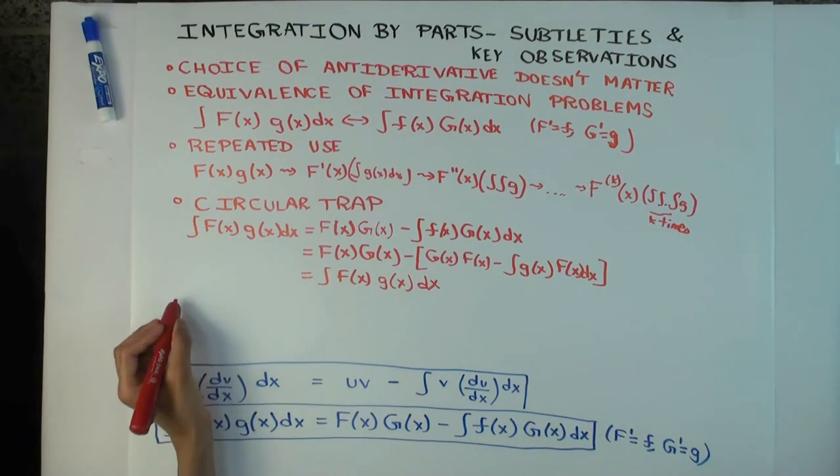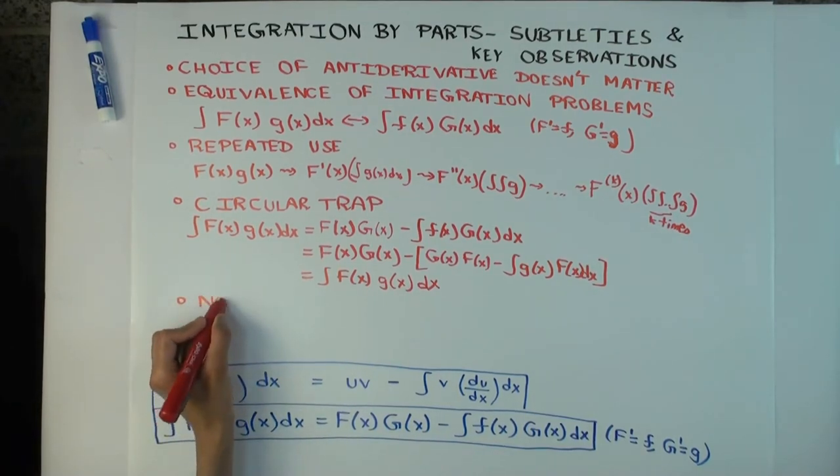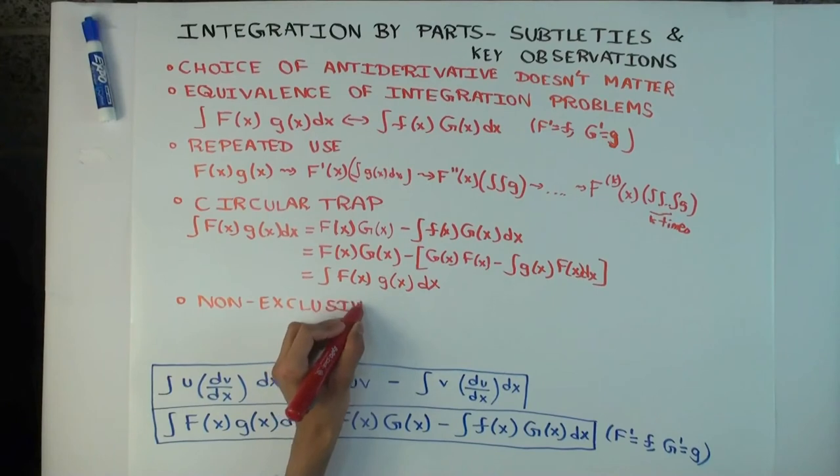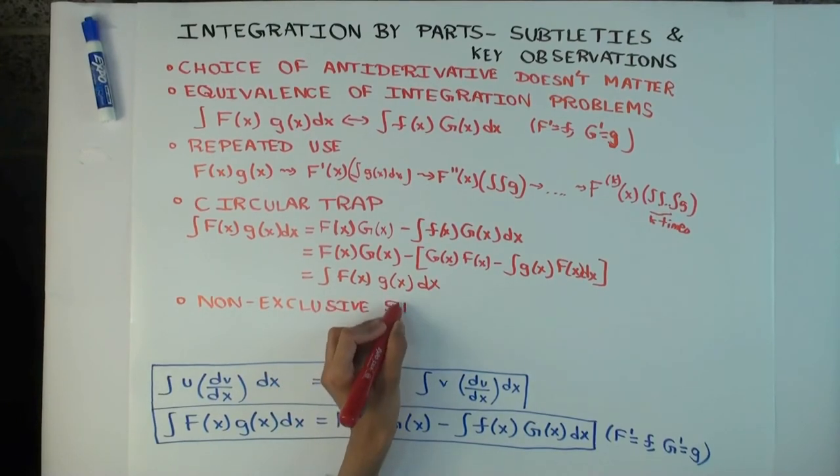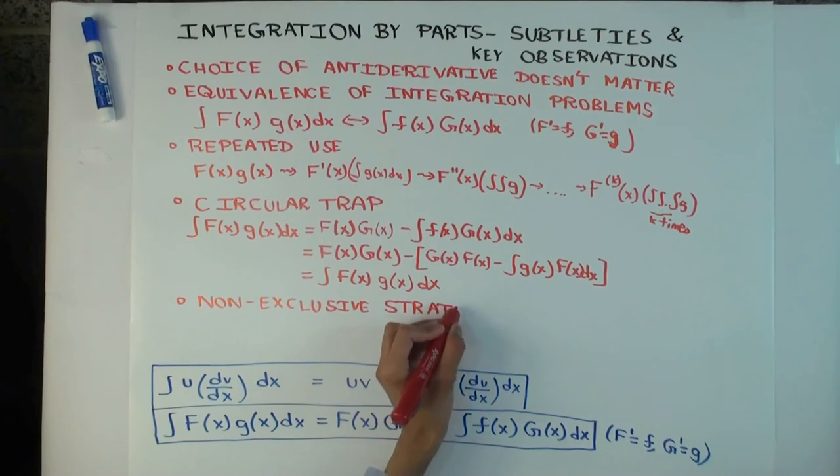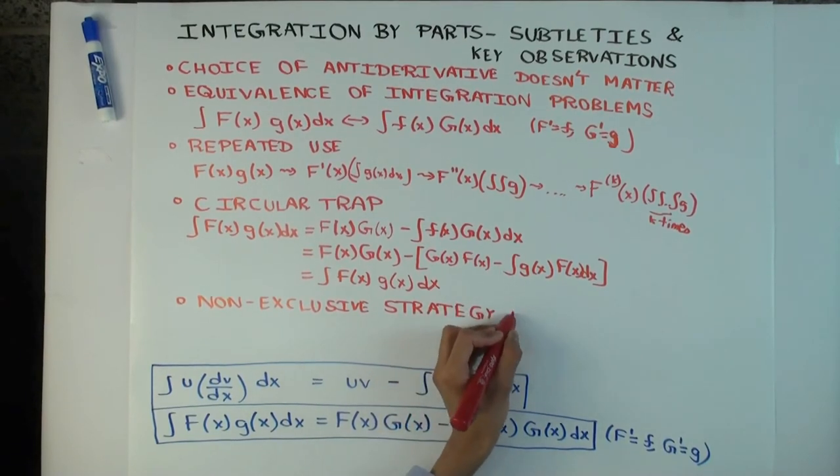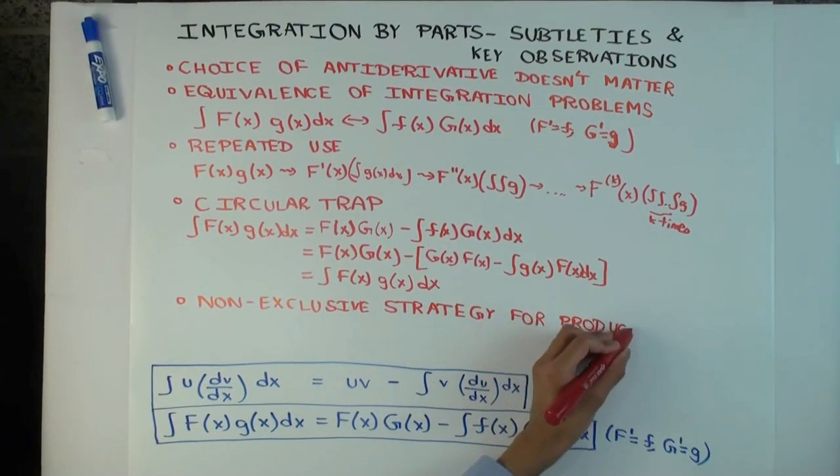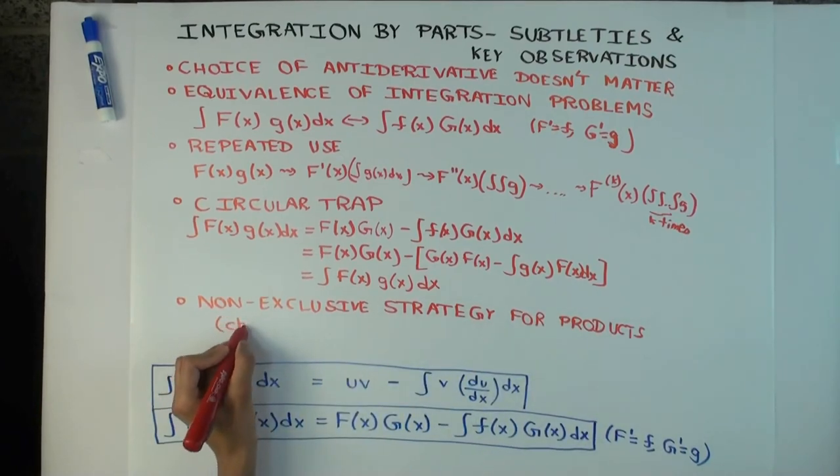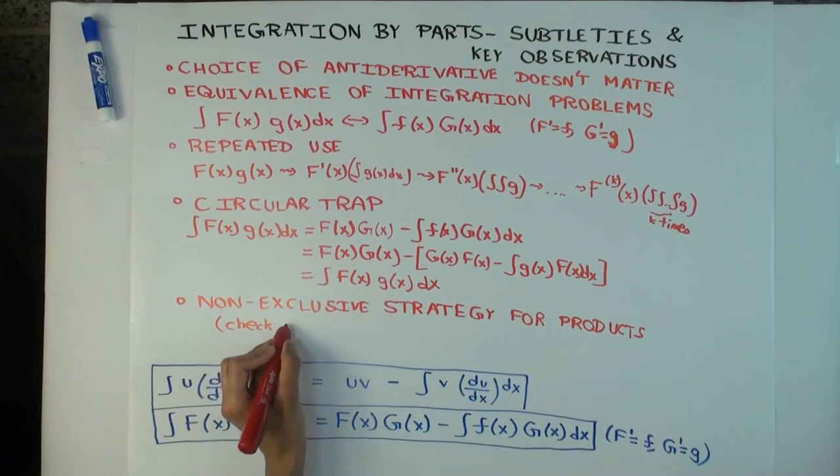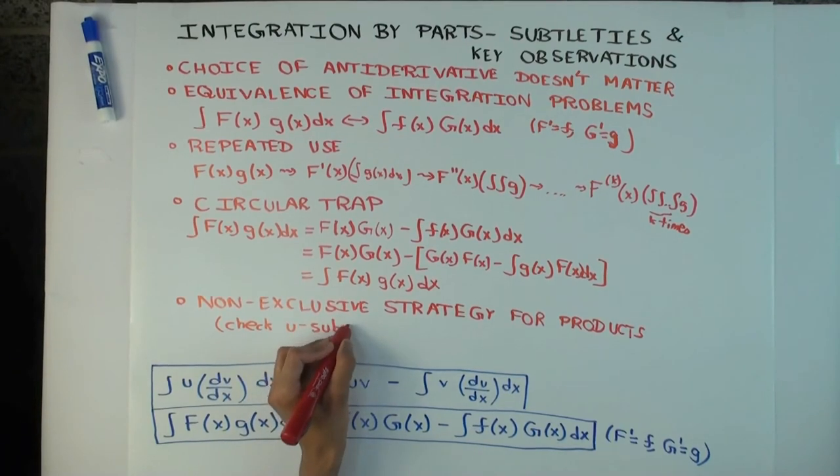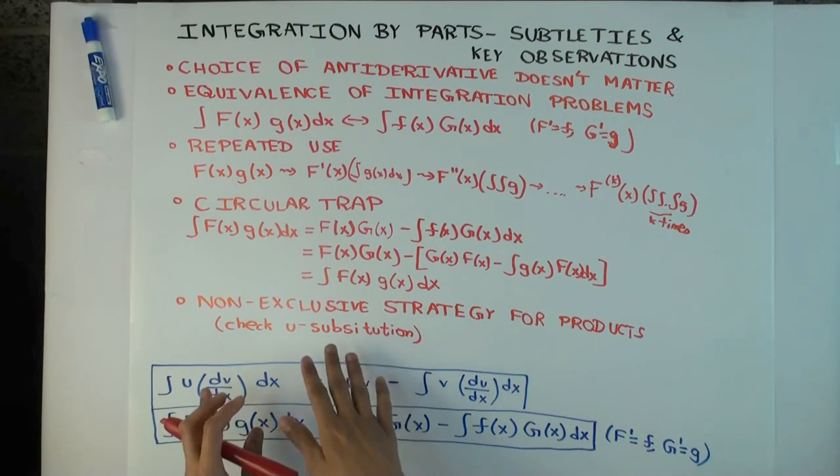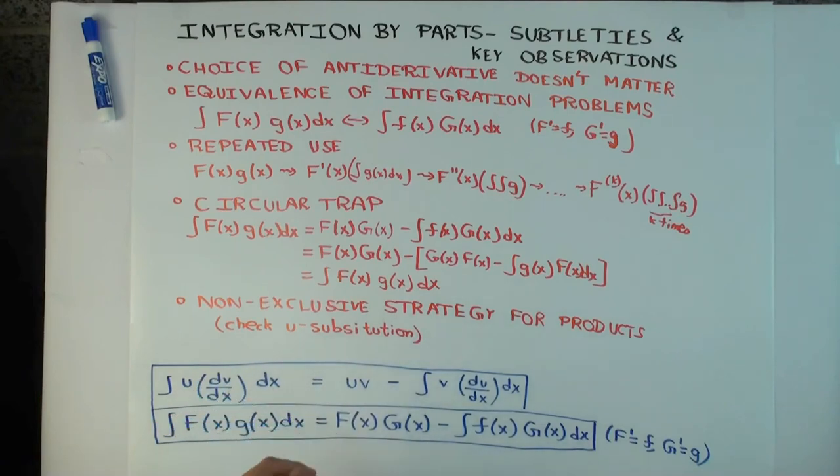Okay. Another small thing I want to say is that there are other strategies for products. So, it's a non-exclusive strategy for products. What I mean by that is, if you see a product that you're trying to integrate, you should check for other ways of doing the product. In particular, you should check for what? U-substitution. Yeah. Okay. And maybe then some other strategy like using a trigonometric identity or something. But definitely, u-substitution is one thing you should check for. And in a future video, we'll look at how to decide whether to use u-substitution or integration by parts.